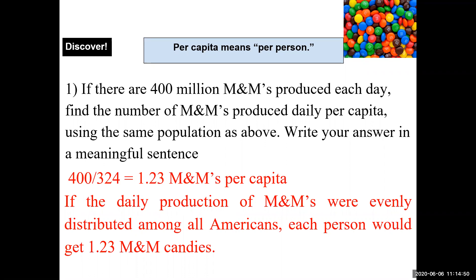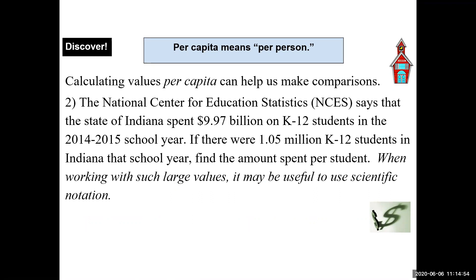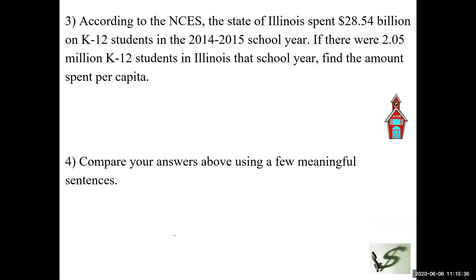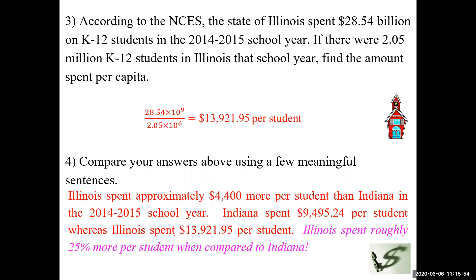The National Center for Education Statistics says Indiana spent $9.97 billion on K-12 students in the 2014–2015 school year. If there were 1.05 million K-12 students in Indiana that year, find the amount spent per student. Divide the total amount by the number of students. That gives the per-student amount — that is per capita. For per capita, always let the population go to the bottom of the division.